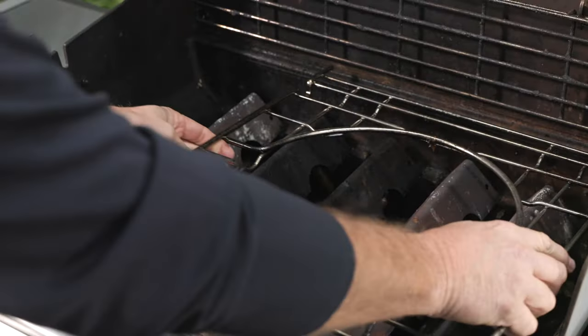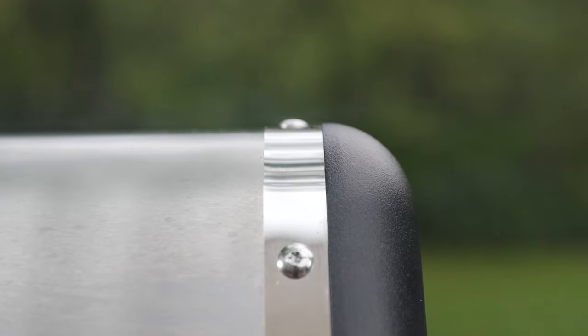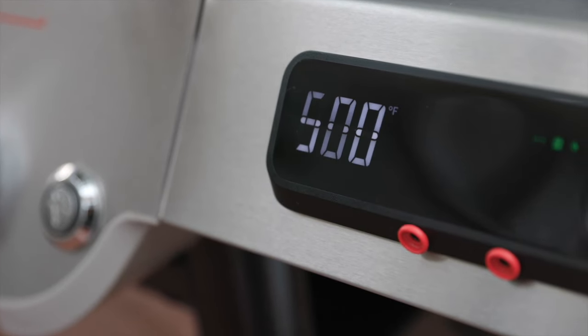Simply remove the right side grate and place the Weber Crafted Frame Kit inside. Preheat your grill anywhere from 400 to 500 degrees.